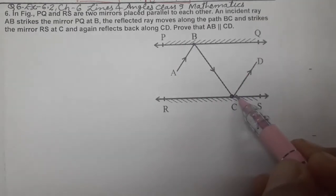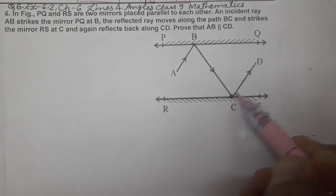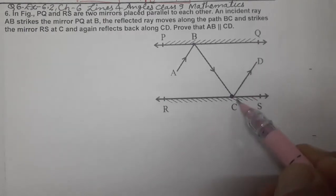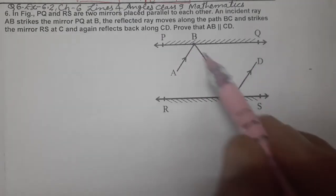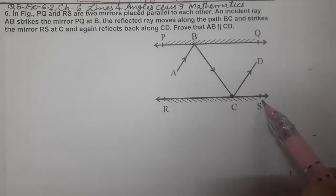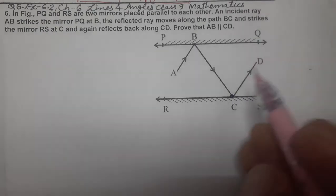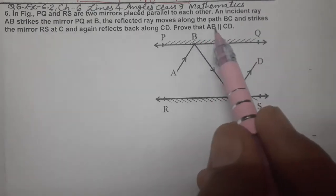And again reflects back. CD is the reflected ray. AB is the incident ray to PQ, BC is incident to RS, CD is reflected ray. Now we need to prove AB parallel to CD.